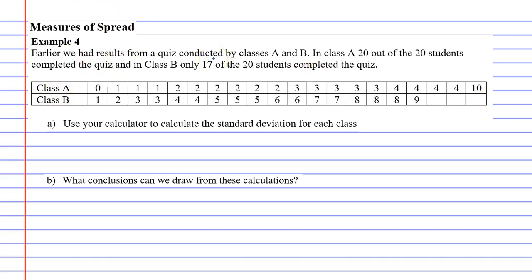We learn that class A had 20 results, and in the question it says 20 out of the 20 students completed the quiz. That means every student completed it. So we're going to calculate the population standard deviation for class A.